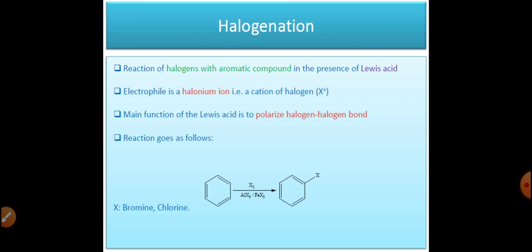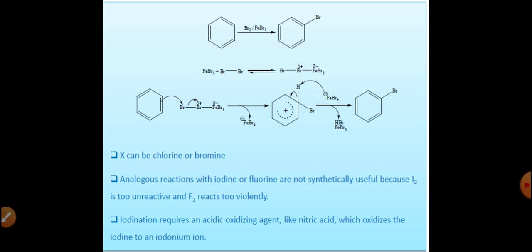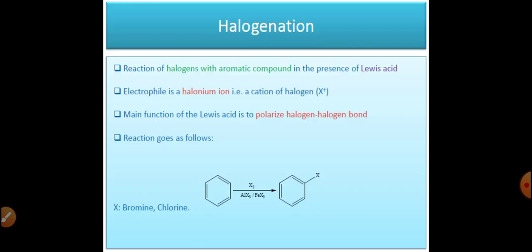First, we will discuss about halogenation. Halogenation of benzene is a reaction in which hydrogen is replaced with a halogen — specifically chlorine and bromine. So chlorination and bromination are two different categories of halogenation. Generally, iodination and fluorination cannot be done: fluorine itself is highly reactive, while iodine is too unreactive. So chlorination and bromination can be done, and collectively they fall under the category of halogenation reaction.